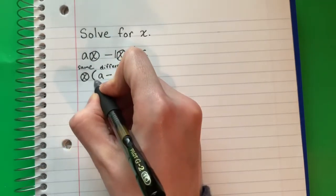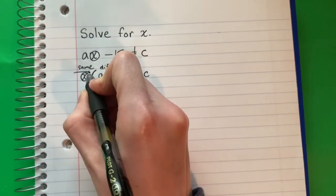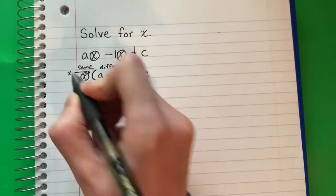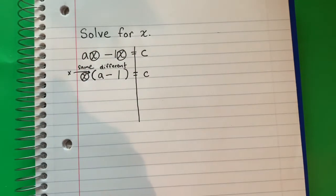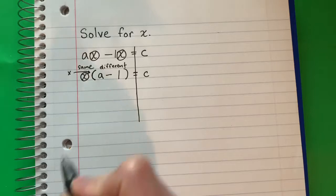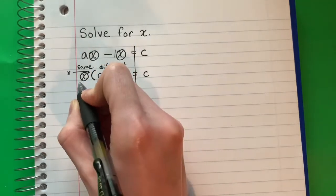This is parentheses. What is parentheses? Parentheses means multiply. I'm going to do the opposite of multiply. The opposite of multiply is divide.